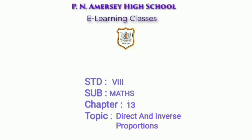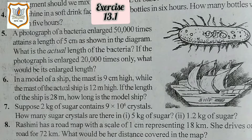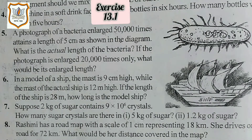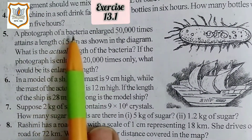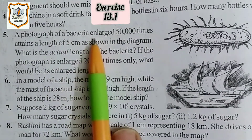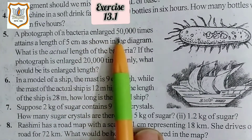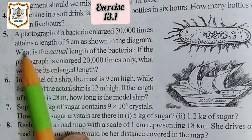Hello students, let's continue Chapter 13 of Maths of Class 8, that is Direct and Inverse Proportions. In this video we will solve the remaining sums of Exercise 13.1. Fifth sum: a photograph of a bacteria enlarged 50,000 times attains a length of five centimeters as shown in the diagram.